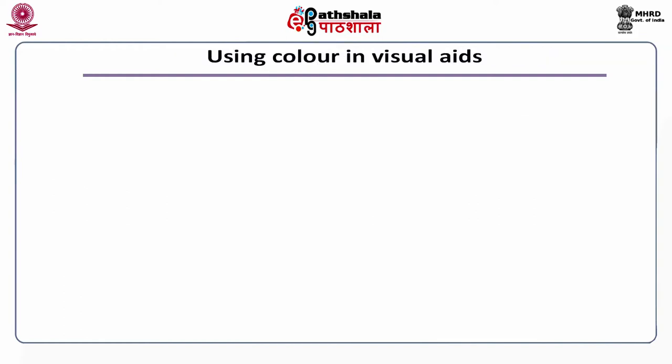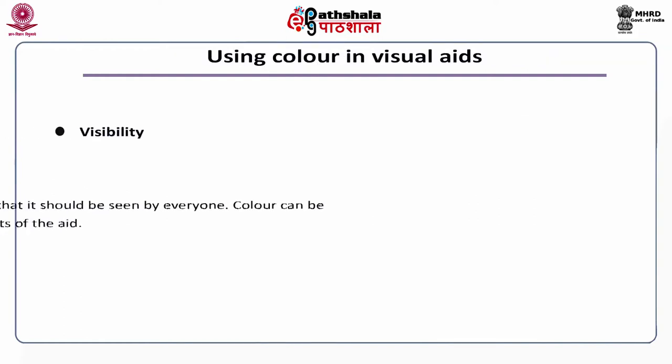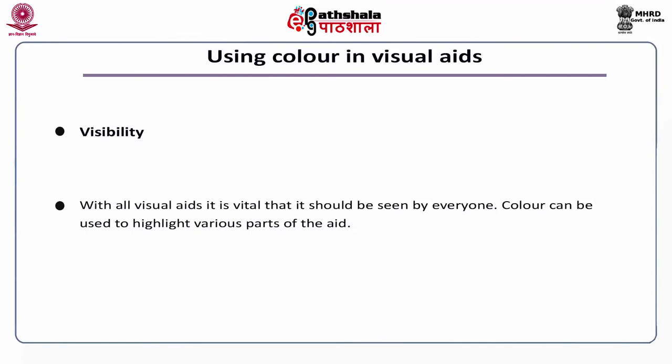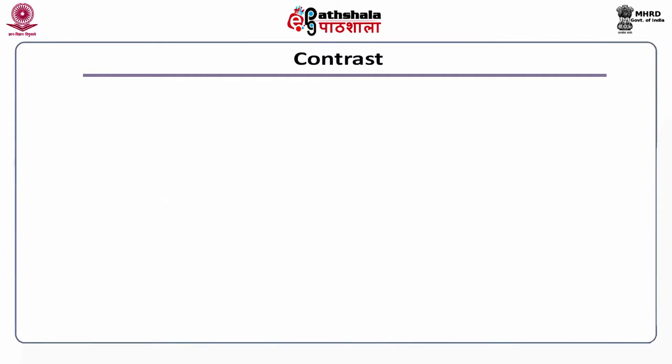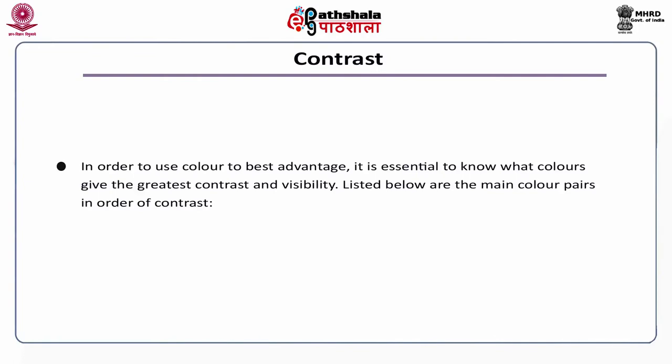Using colors in visual aids. Visibility: with all visual aids, it is vital that they should be seen by everyone. Color can be used to highlight various parts of the aid. Contrast: in order to use colors to best advantage, it is essential to know what colors give the greatest contrast and visibility. Some of the color pairs in order of contrast are given below. Interest: colors always add interest to any aid.